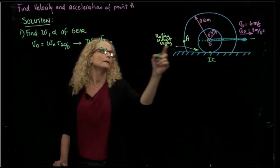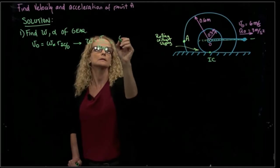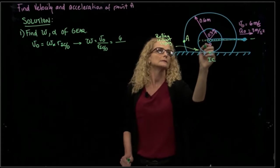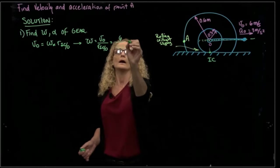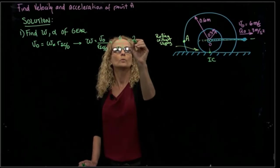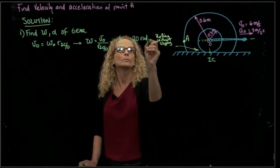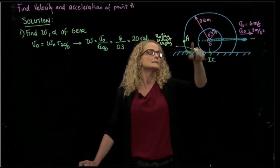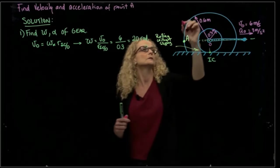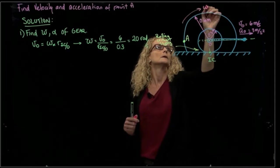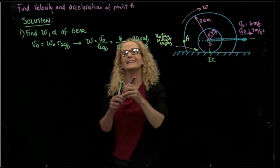And that will be velocity of O is 6 and the distance is 0.3. So it gives me an angular velocity of 20 radians per second. And since this is moving in that direction, the angular velocity is in this direction. So it is a negative value.